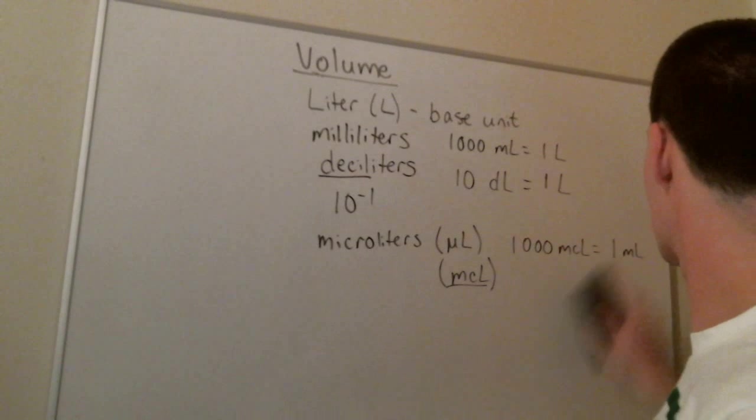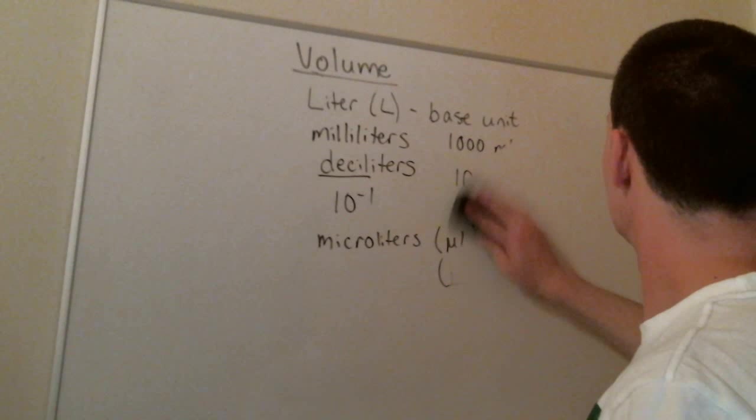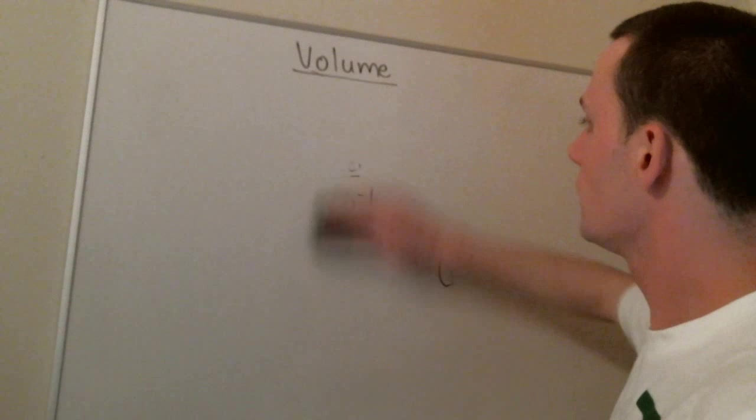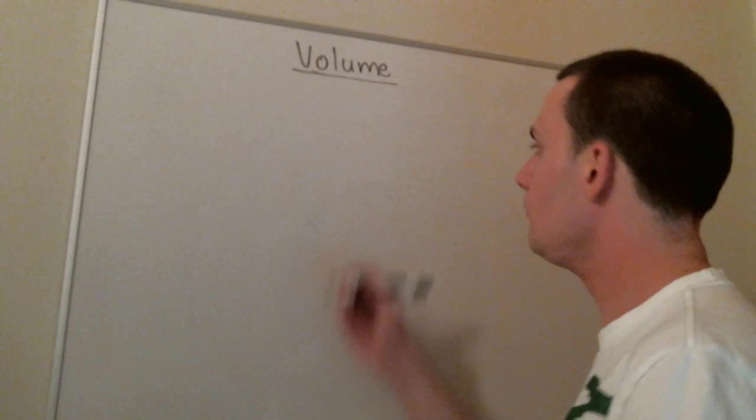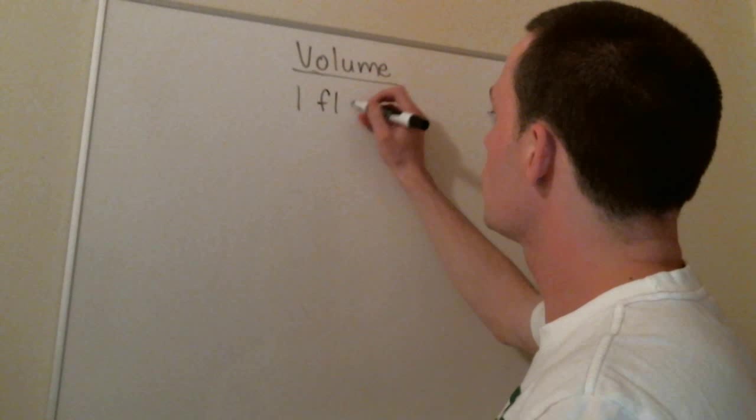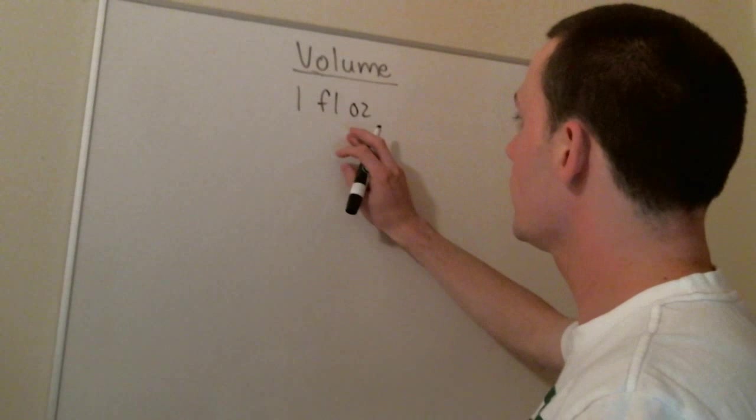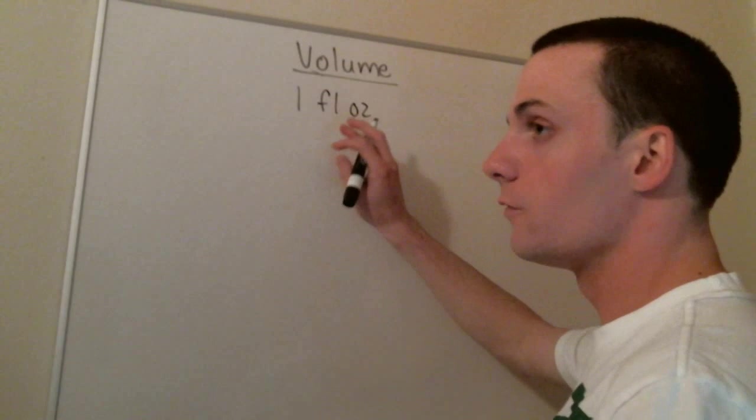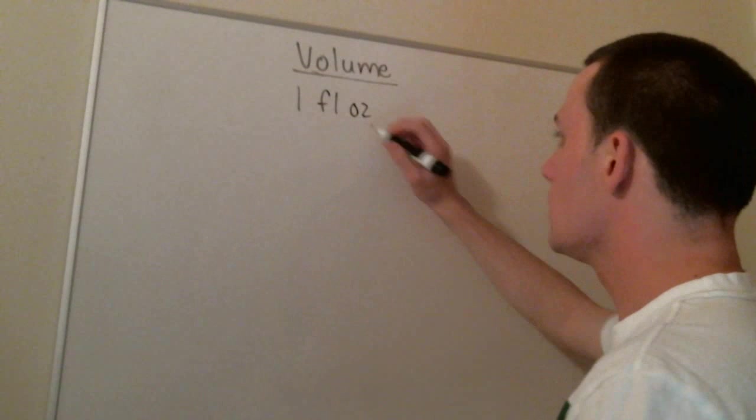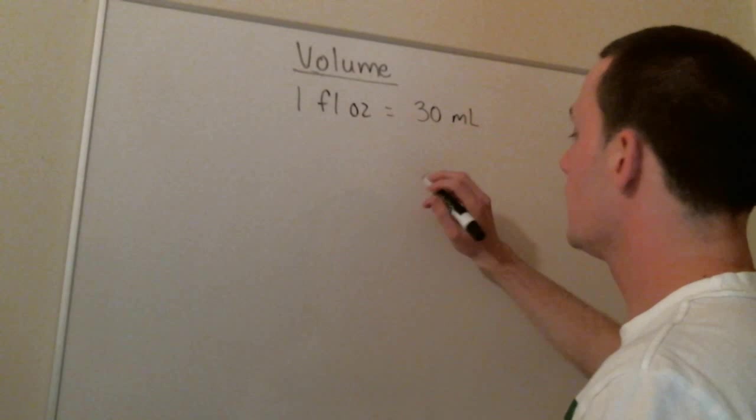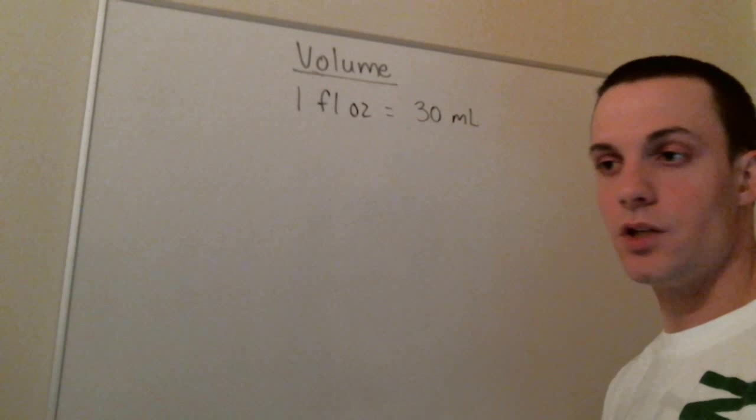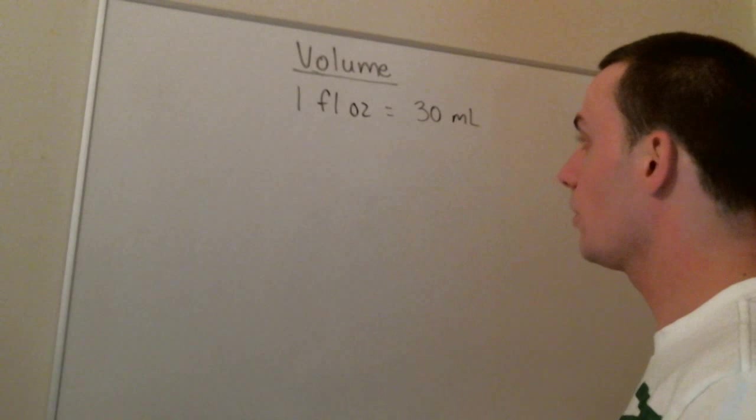Let's take a look at some conversions to the customary system. So we more commonly use fluid ounces to measure liquids or to measure volume in the United States. And one fluid ounce is about equal to 30 milliliters. Again, it's just an approximation. It's not an exact conversion.